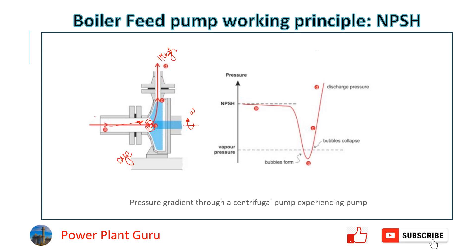Whatever static pressure is coming from the deaerator, because of the negative pressure phenomenon created at the eye of the impeller, the pressure reduces further at that point. As shown in the chart, whatever suction pressure is coming from the deaerator at the pump inlet, at the impeller eye the pressure reduces, and then again at discharge the pressure is high. Every centrifugal pump follows this phenomenon.